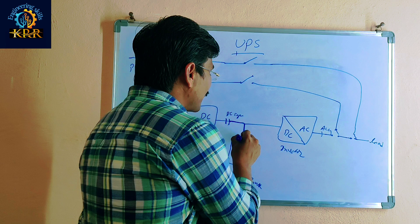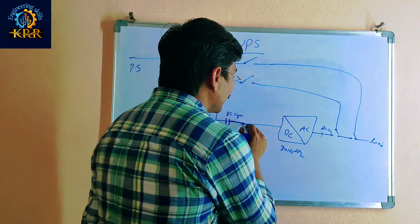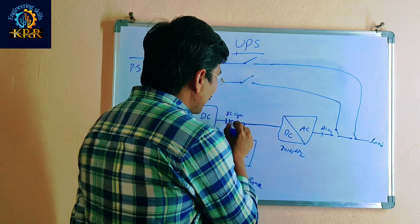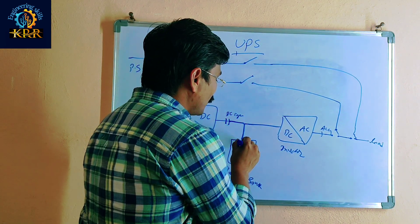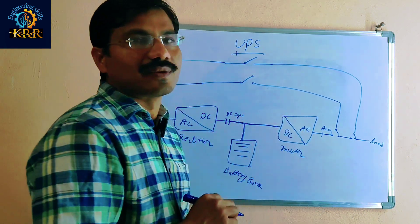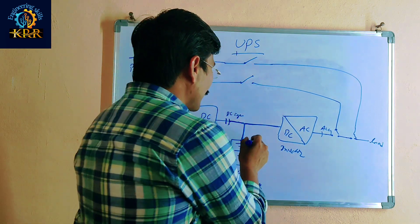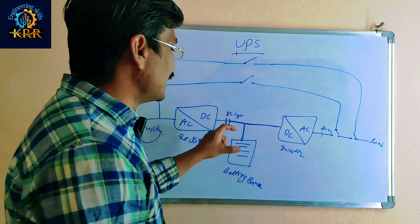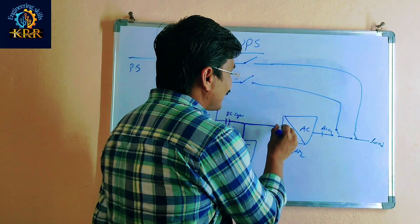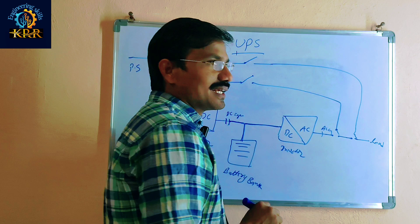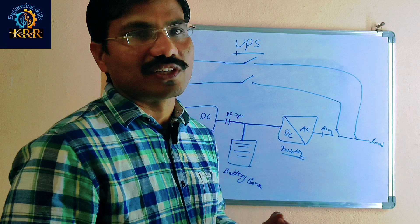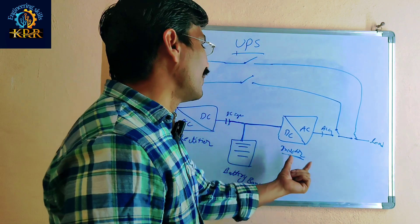Pure DC is passing into the batteries and also into the inverter. If it is an online UPS, the pure DC passes into the batteries simultaneously and also passes through the inverter. The battery banks store the DC power. After that, the inverter converts the DC power back into AC power.